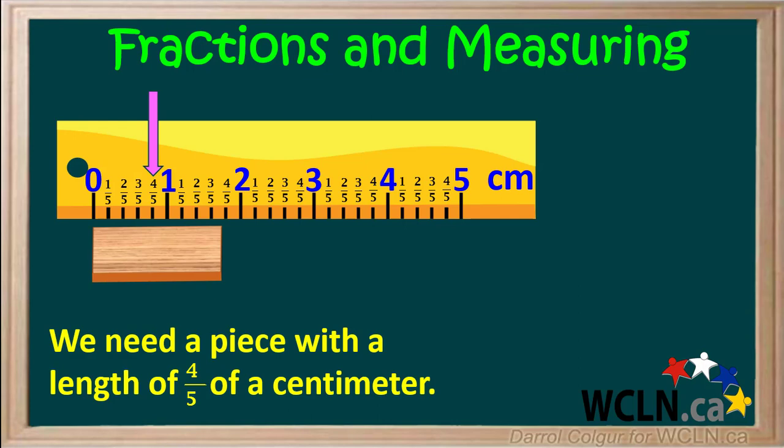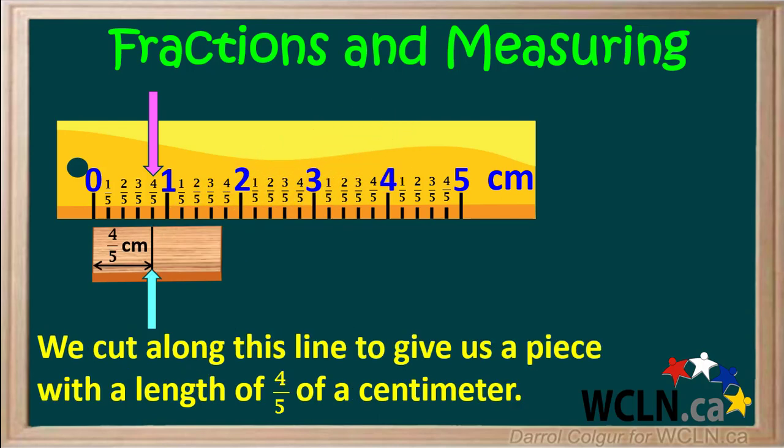The pink arrow shows where four fifths of a centimeter is on our ruler. So we can get a pencil and draw a line on our piece of wood right at four fifths of a centimeter. Now we just need to cut along this marked line to give us a piece of wood with a length of four fifths of a centimeter.